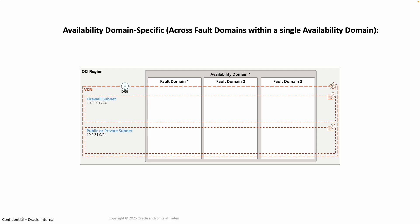The Availability Domain Specific configuration offers redundancy across different fault domains within one Availability Domain. This is the right choice for applications that need a balance of high availability and low latency. OCI automatically distributes the firewall's underlying components across these distinct fault domains.